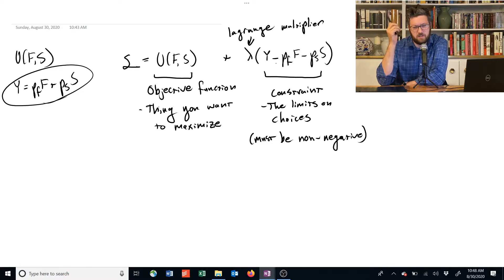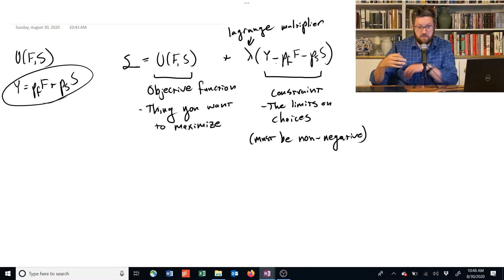And if we're saying it must be non-negative, then that means it has to be either zero or positive. If it's positive, that's saying that your income is greater than the amount you're spending, and that could be the case. But it won't tend to be the case under non-satiation, because more is better, and if the prices are not zero, then that means you're going to buy more if you're given the option to maximize your utility.